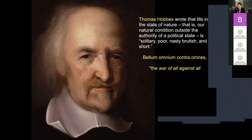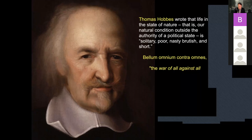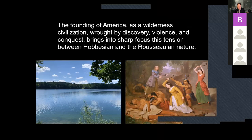Hobbes had the opposite view of Rousseau. Where Rousseau thought that if we could get back to nature we would live in tranquility and peace, he looked at civilization as the moment at which everything was compromised. Hobbes, on the other hand, sees the origin of the problem as our nature itself, and that we need to get beyond it. The founding of America as a wilderness civilization, brought by discovery, violence, and conquest, brings into sharp focus this tension between Hobbesian and Rousseauian nature.